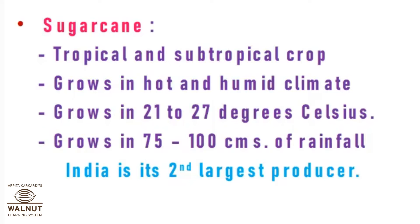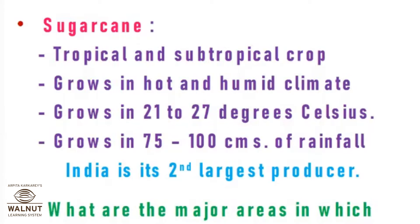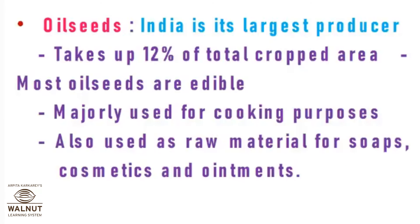India is the second largest producer of sugarcane. You can also mention India's rank as the second largest producer in your table, along with geographical conditions required for the crop. What are the major areas in which sugarcane is grown? List the states. Another food crop is oilseeds — India is the largest producer of oilseeds.